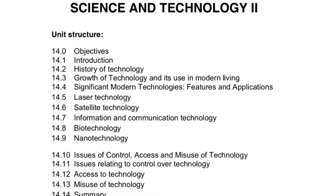Chapter 14 Science and Technology Part 2. Objectives: to understand the stages in growth of technology and to analyze the role of technology in modern life. Technology is the application of scientific knowledge. It is a sign of how man's knowledge of nature has increased and how his wants have diversified. Technology is one of the ways to measure the progress of mankind.